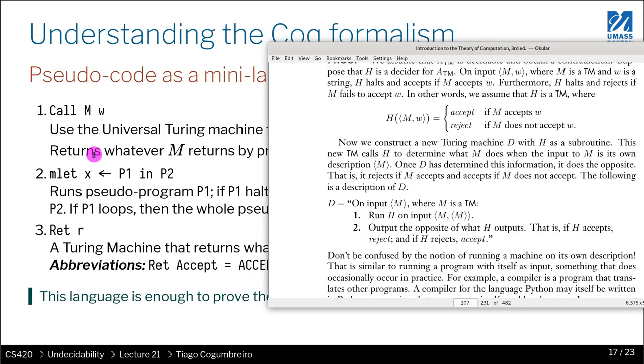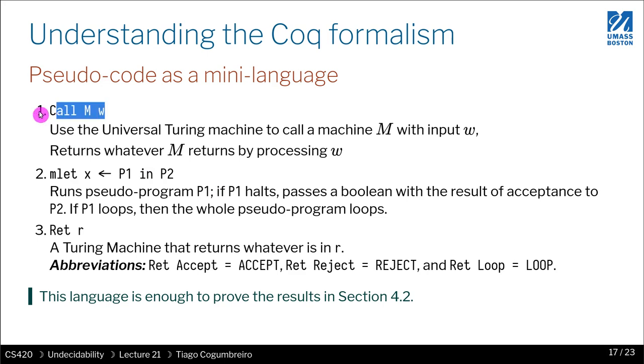We have this call that is calling a machine with a certain input, and the way you have to think of it is there is a Turing machine—the universal Turing machine—that actually just does calling. What does the universal Turing machine do? Well, the universal Turing machine is an interpreter. It takes the description of a machine and it takes some input, and it runs that Turing machine with that input.